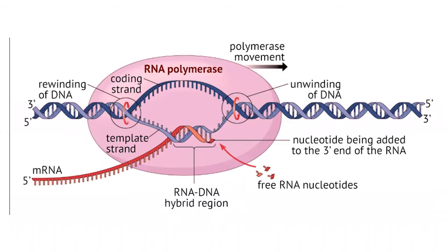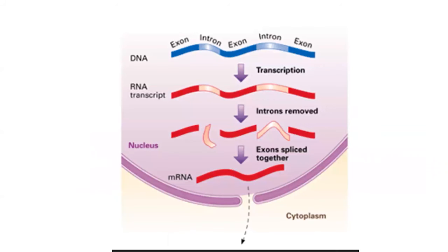The process to copy this information is called transcription. The information stored in a gene's DNA is used as a template and transferred to a similar molecule called RNA in the cell nucleus. The type of RNA that contains the information for making a protein is called messenger RNA because it carries the information or message from the DNA out of the nucleus into the cytoplasm. This copy is made by an enzyme called RNA polymerase which binds to the promoter site. The RNA polymerase moves across the DNA unwinding it, and on one strand of DNA a complementary strand is made from nucleotides available in the nucleus.